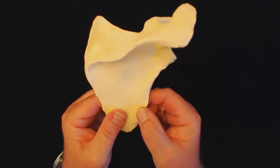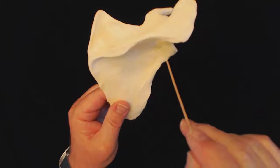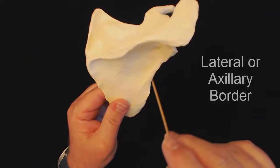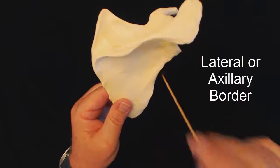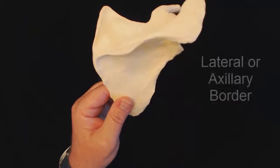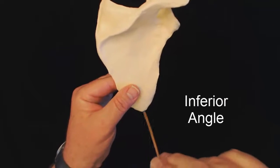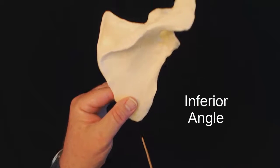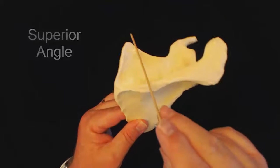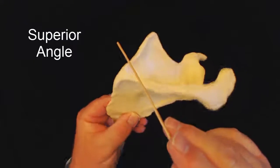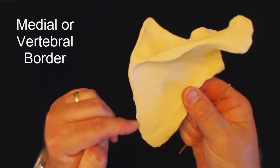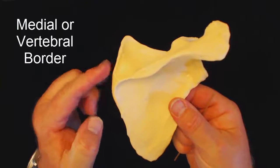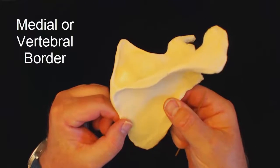And other structures that we're going to see are going to be the lateral or axillary border. Axillary refers to the armpit. We have the inferior angle at the bottom. We have the superior angle at the top. And then off to the side here, we're going to have the medial or vertebral border.